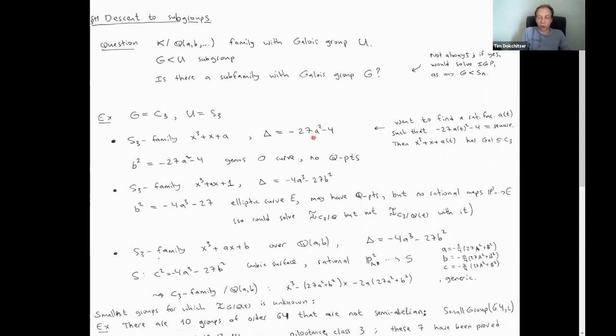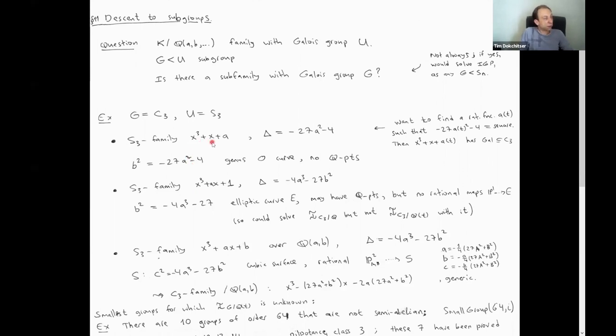The discriminant of x³ + x + a, up to squares, is −27a⁴ − 4a² ... wait, actually it's −27a² − 4 (up to squares). I want rational a, or ideally a rational function a(t), such that −27a(t)² − 4 is a square. Unfortunately for this family it's impossible: −27a² − 4 is very negative, so setting it equal to b² gives a genus-zero curve over the rationals with no real points — a local obstruction. This family has no C3 specializations.